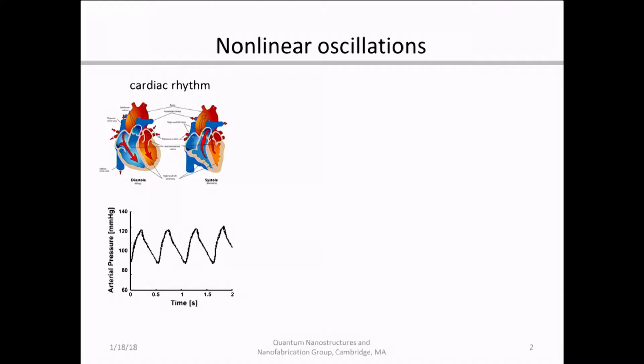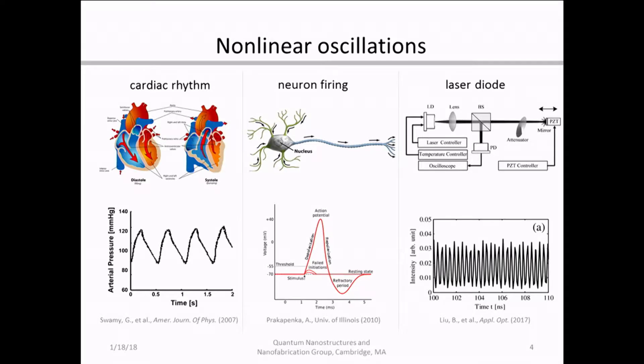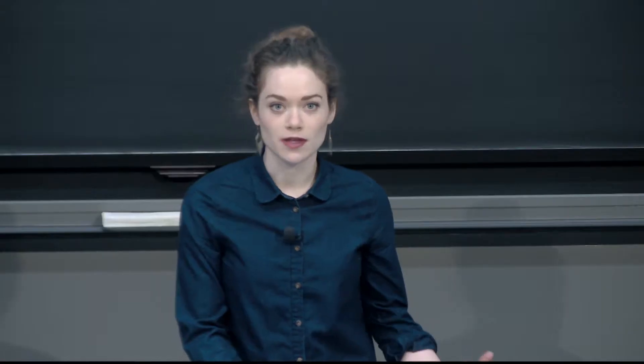Nonlinear oscillations are found in a wide variety of natural and physical systems. For instance, cardiac rhythms, neuron firing, and laser diodes with optical feedback all show some type of nonlinear oscillatory behavior.